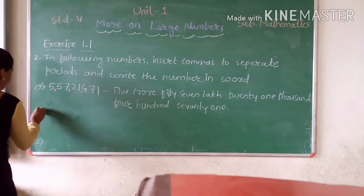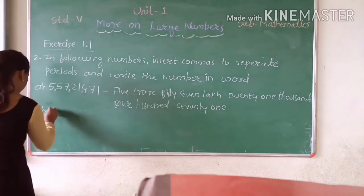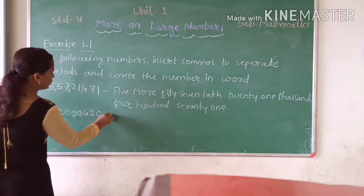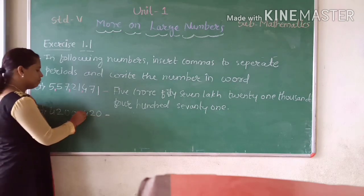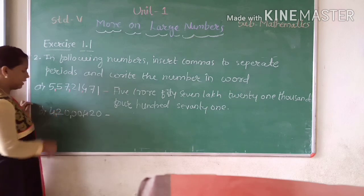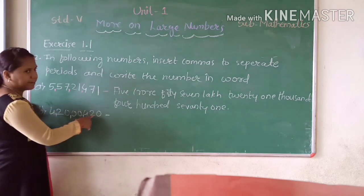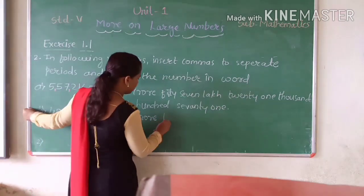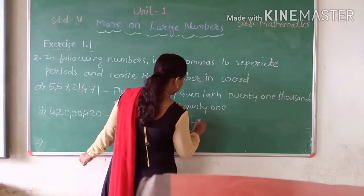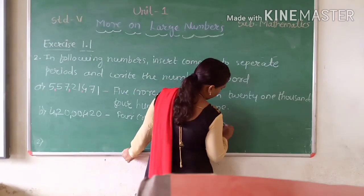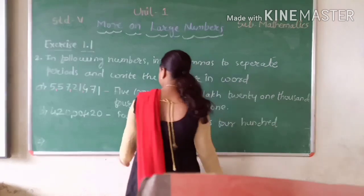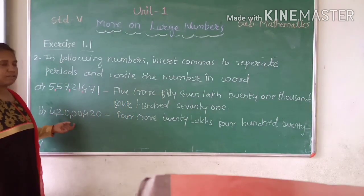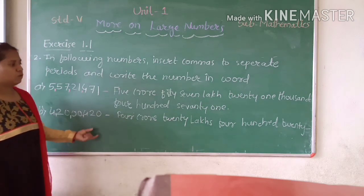Let us take one more example. Here we have to insert the comma. The first comma will come before the 3rd digit; then after thousands, then lakh, like that. It is 4 crore, 20 lakh, 420. When the thousands period has 0, it reads as 4 crore, 20 lakh, 420.